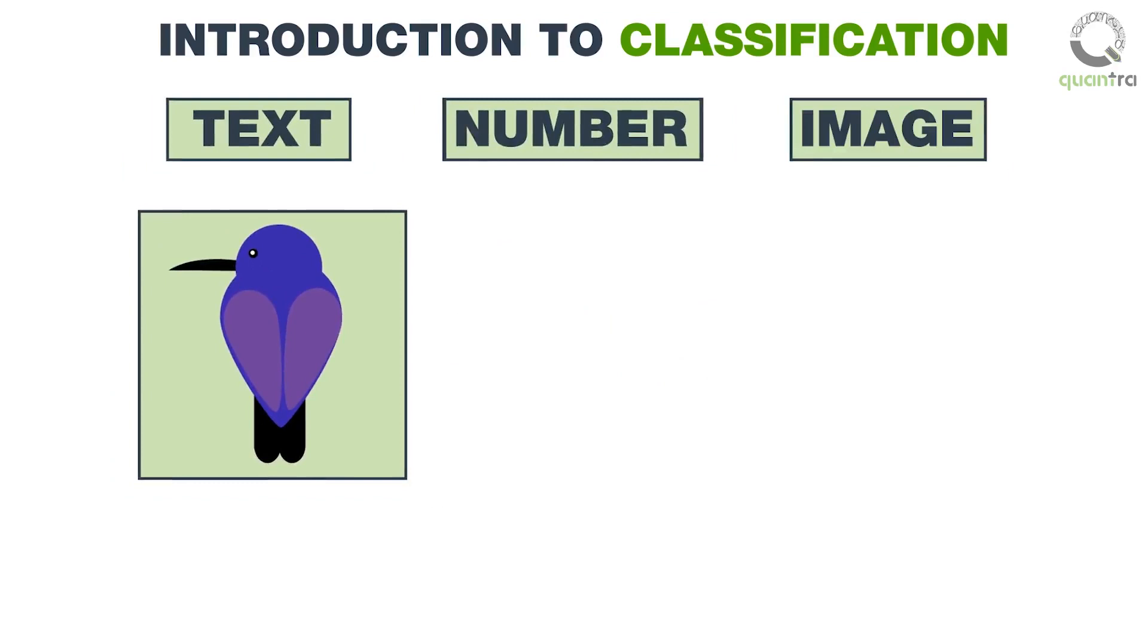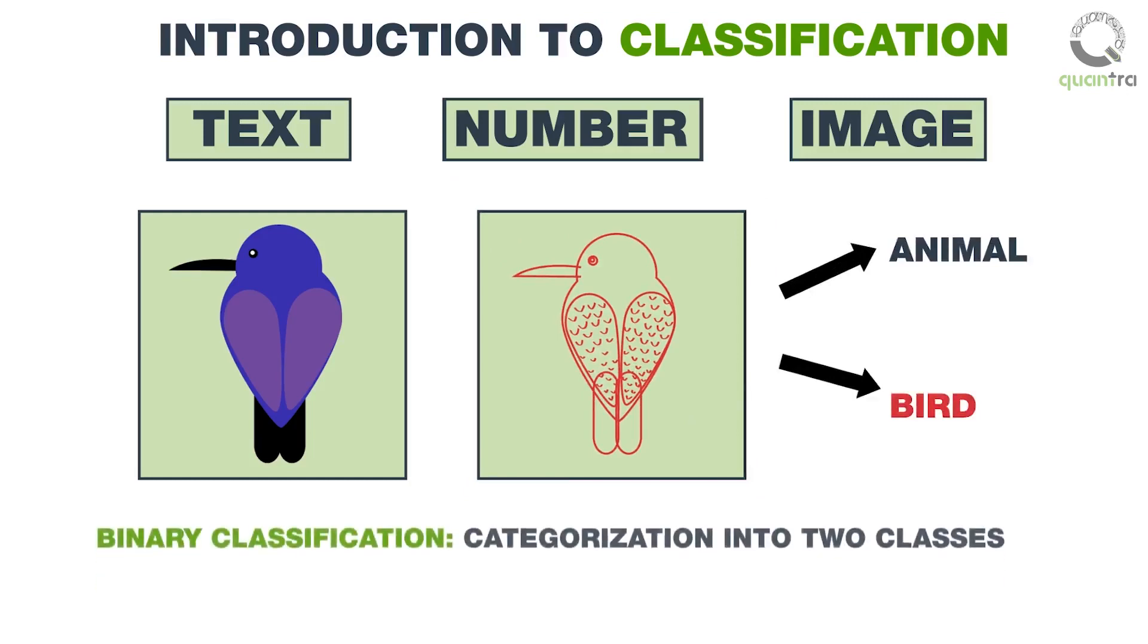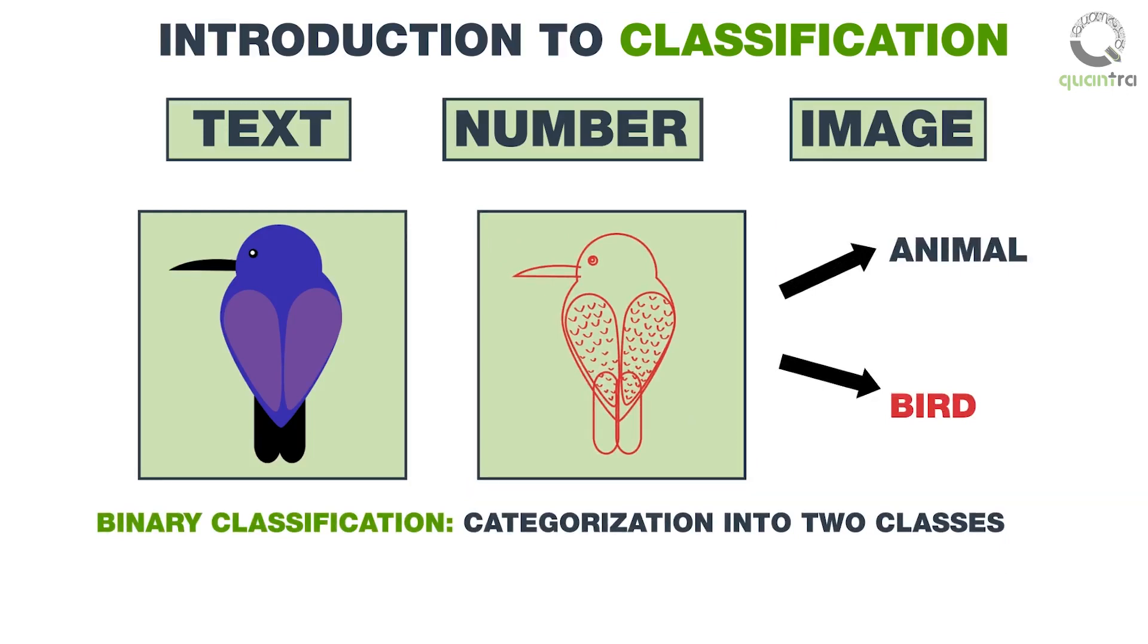Consider this image. The classifier will perform image detection to predict whether the image is of an animal or a bird. This type of classification, in which input is categorized into just two classes, is known as binary classification.